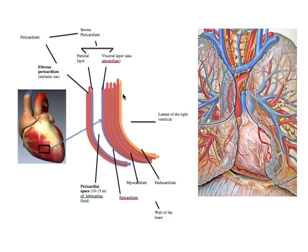More superficial to the endocardium is the myocardium, which are the muscle cells of the heart. Superficial to that is the epicardium — 'epi' meaning above — the outermost layer of the heart wall. To review, the wall of the heart is made up of three layers: the innermost endocardium made of simple squamous cells, then the myocardium which are the muscle cells, and then the epicardium.